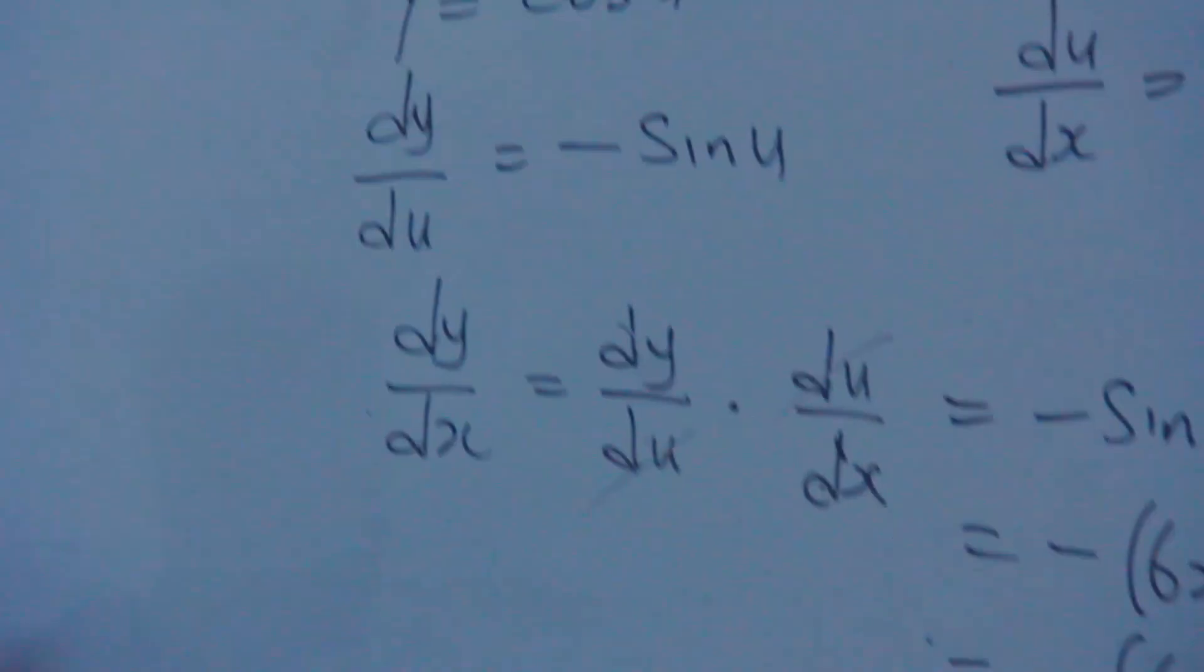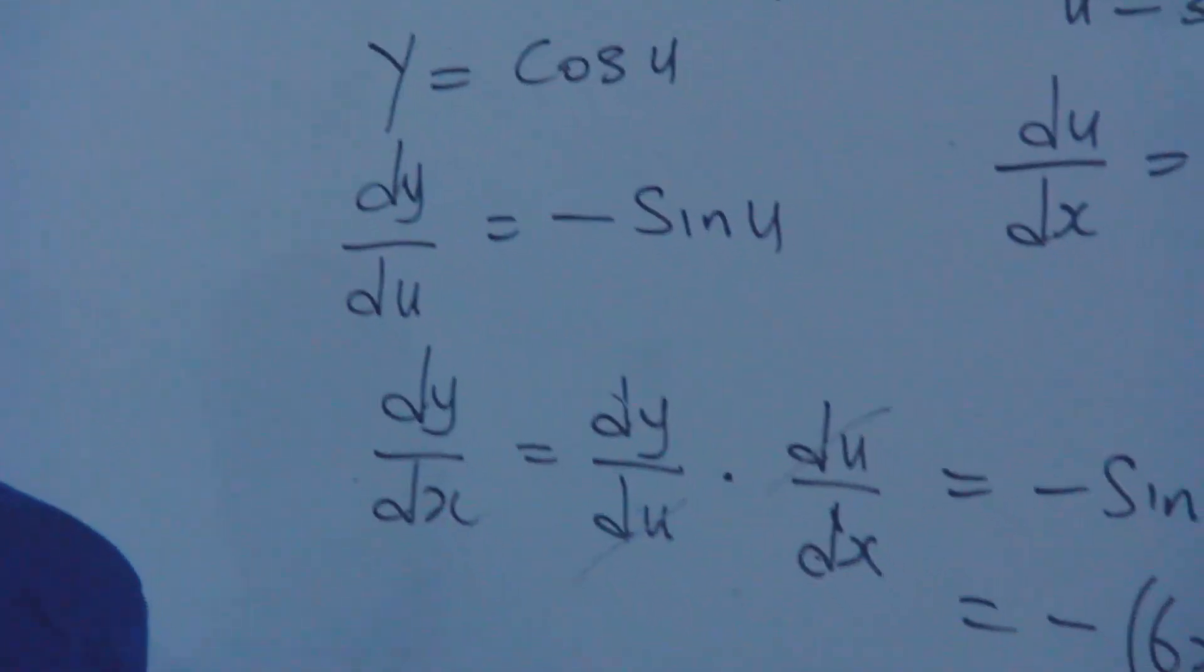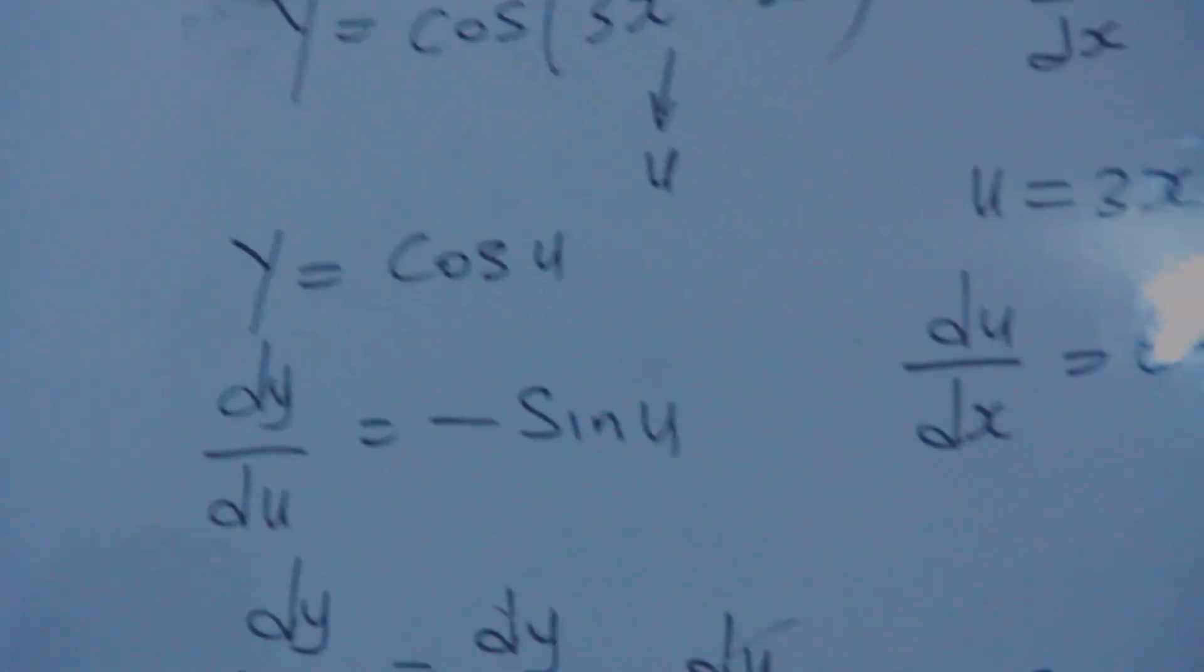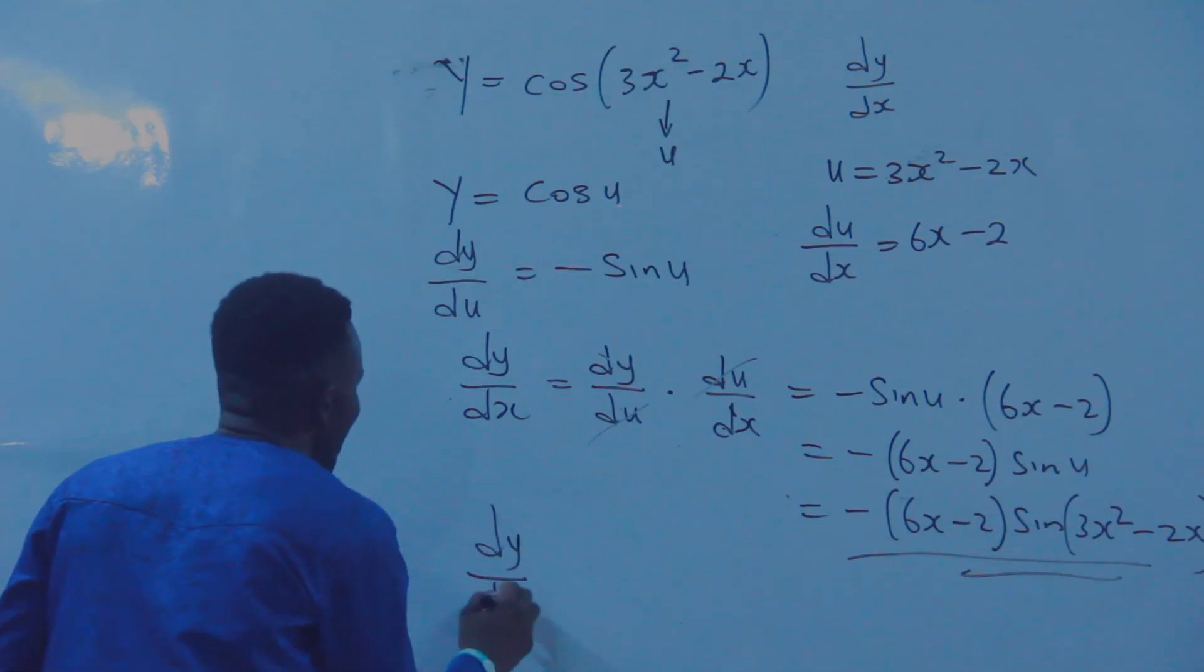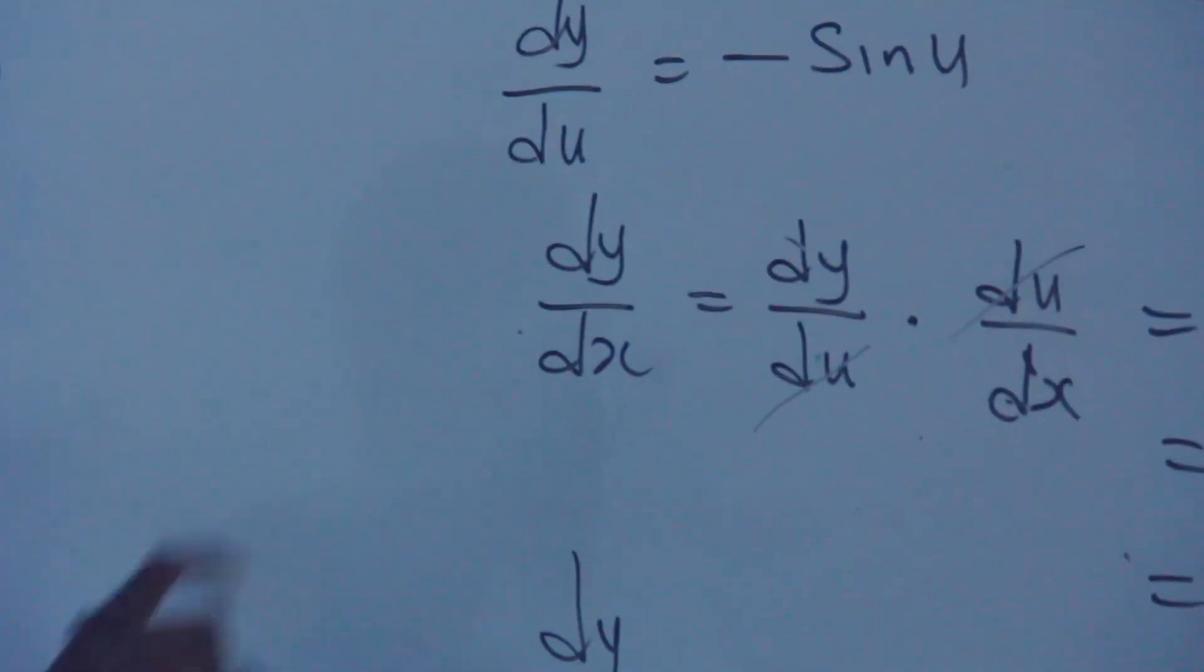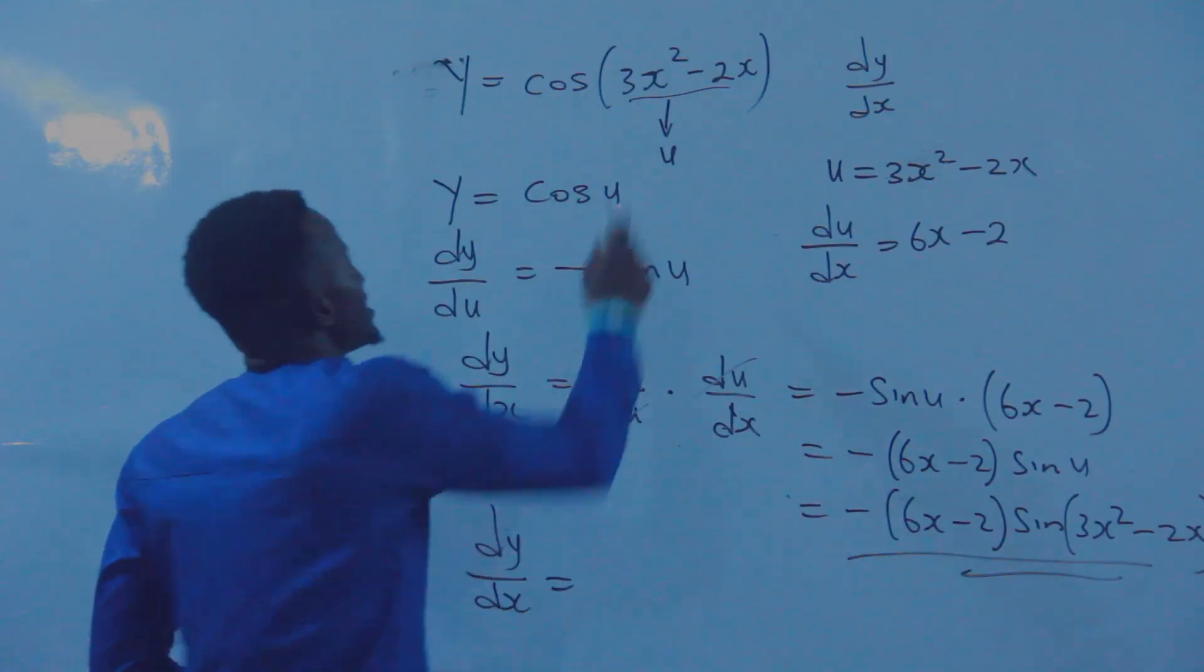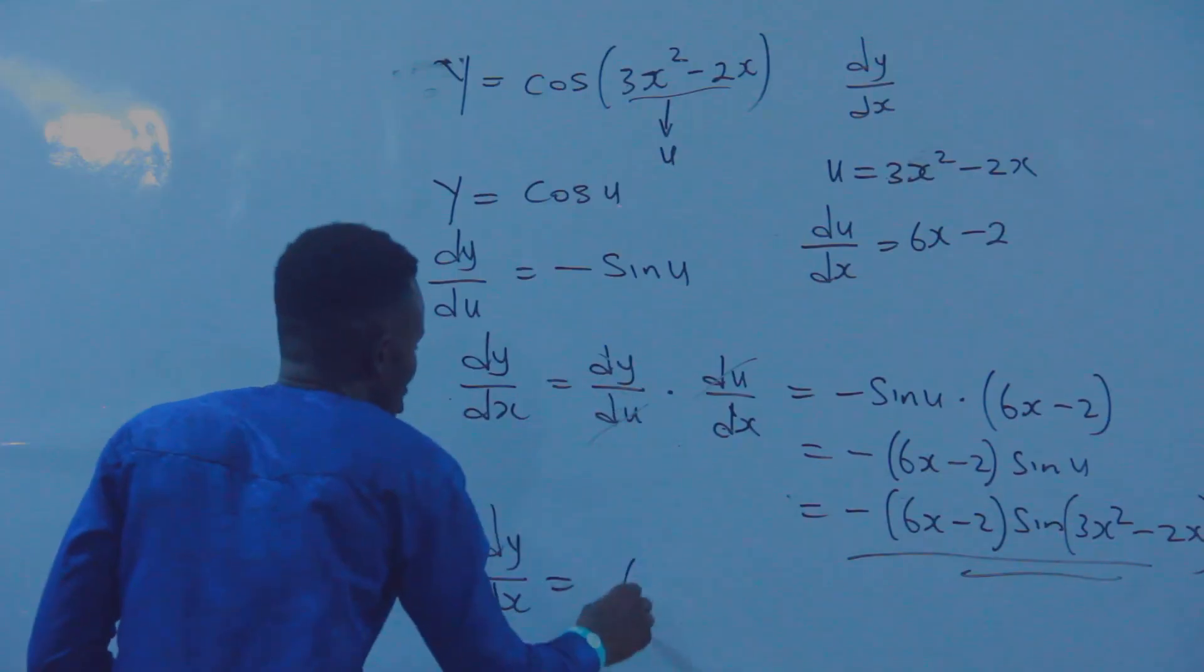Now, what's the shortcut? This is the AND method. Now let us move to the AND shortcut. If you are given this kind of question, one thing I will do is that dY/dX equals—now look at this—I will differentiate what is inside this bracket.